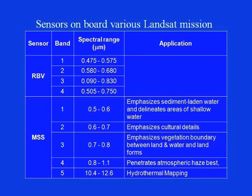The RBV (Return Beam Vidicon) is primarily a camera system with 4 bands operating in the following spectral ranges: Band 1: 0.475–0.575 µm, Band 2: 0.580–0.680 µm, Band 3: 0.690–0.830 µm, and Band 4: 0.580–0.580 µm.